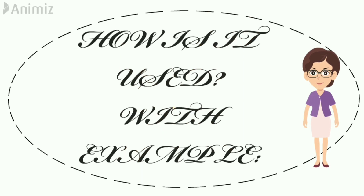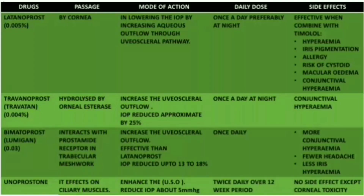The first drug is latanoprost, used at 0.005% concentration. Its passage is through the cornea, and its action is lowering the IOP by increasing aqueous outflow through the uveoscleral pathway, helping the fluent flow of aqueous outflow. Daily dose is once a day, preferably at night.